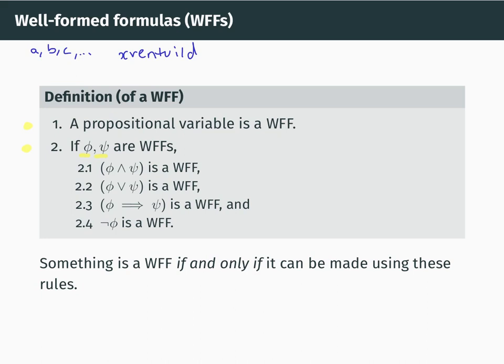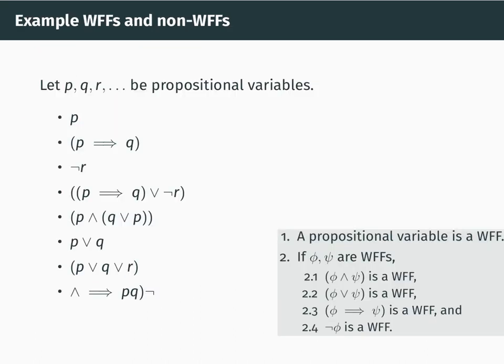Let's look at some examples of well-formed formulas and things which are not well-formed formulas. Taking p, q, and r as propositional variables: our first example is just the propositional variable p, and that is a well-formed formula — green tick — it is a well-formed formula by rule one, which says that every propositional variable on its own is a well-formed formula.